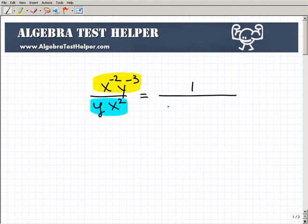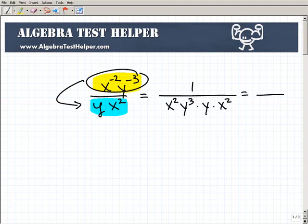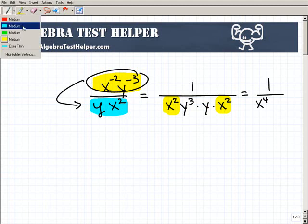So this becomes 1 over x squared y cubed times y times x squared. I just moved these down to join the other powers with positive exponents. Then simplify: x squared times x squared is x to the fourth, and y cubed times y is y to the fourth.